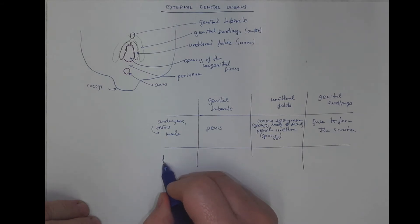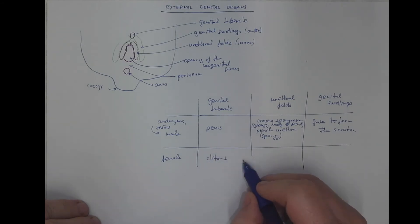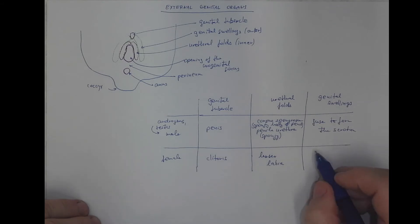In female embryos, the genital tubercle becomes the clitoris, and the urethral folds become the lesser labia, while the genital swellings become the greater labia.